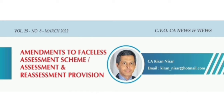The AAU, after taking into account all the material available on record, prepares an income or loss determination proposal. If no variation prejudicial to the assessee is proposed, the proposal is forwarded to NIFAC. Otherwise, a show cause notice as to why the proposed variation should not be made is served on the assessee through NIFAC. The assessee shall file his reply to the show cause notice to NIFAC within the specified time, which NIFAC shall forward to the AAU. If the assessee fails to respond, NIFAC intimates such failure to the AAU, and the AAU prepares a final income or loss determination proposal and forwards it to NIFAC.